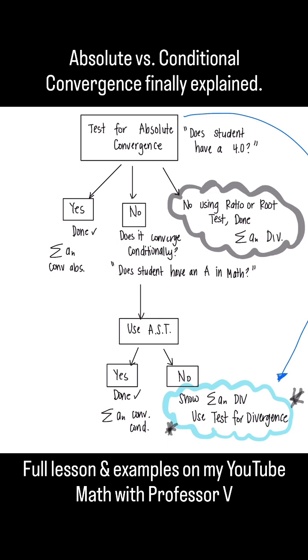And then, like I said, if you get a no using the ratio or root test, then you're done. You don't do A-S-T to check for conditional convergence. Ratio and root.